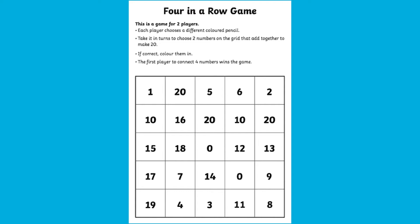One of the activities that you could do with your child is this four in a row game. Take it in turns to colour in two numbers on the grid that add together to make 20. The first player to connect four numbers wins the game.